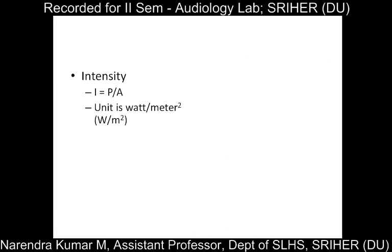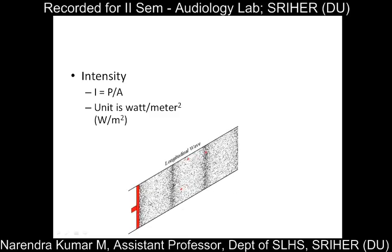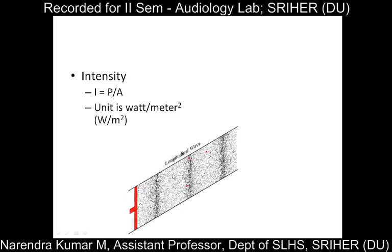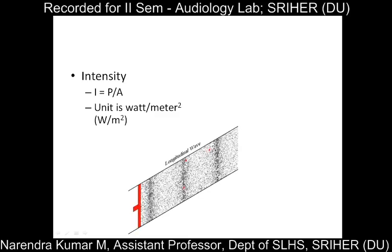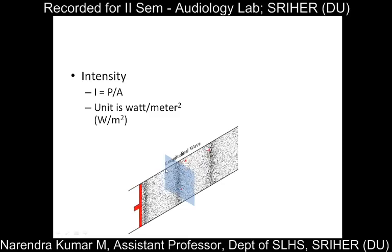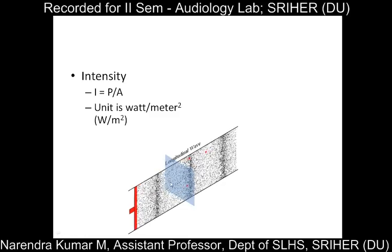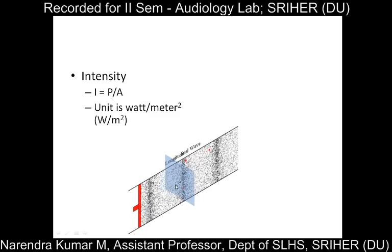Now that we have understood what power is, we'll see what intensity is. This amount of power in a unit area is defined as intensity, and its unit is watt per meter square. Imagine the sound moving in 3D space — if we take a small square with equal sizes on all four sides, the amount of power being exerted in that small square is defined as intensity.